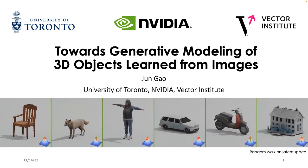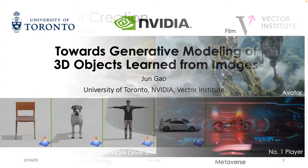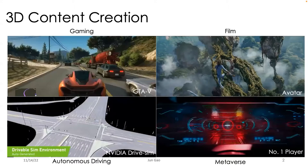Thanks so much for having me here and for the nice introduction. Today I'm going to talk about our efforts towards building a generative model for 3D objects learned from 2D images. To begin with, creating 3D content is one of the most fundamental problems in computer vision and has many applications.